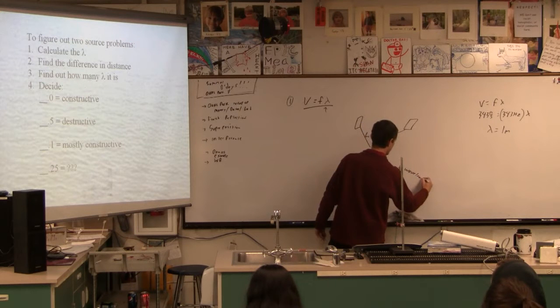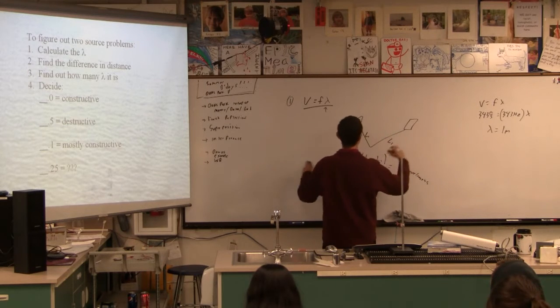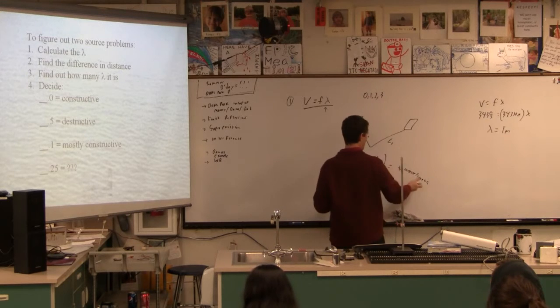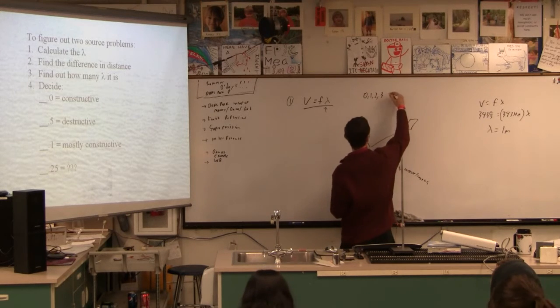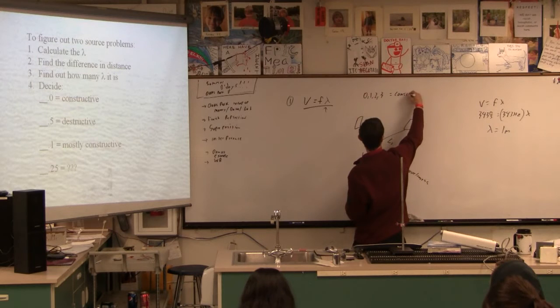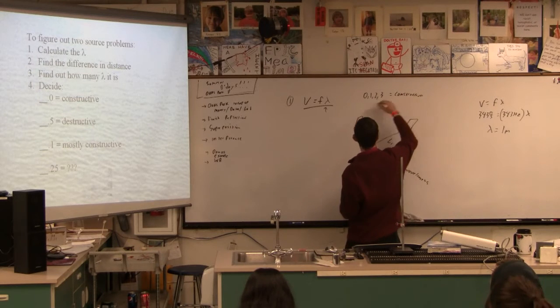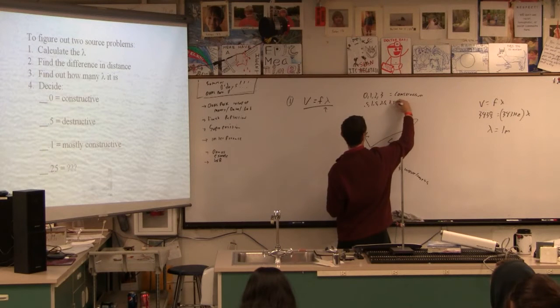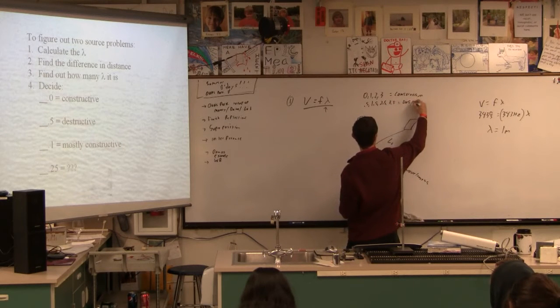And then, what you want to do is figure out how many wavelengths that is. So you're going to divide this by the wavelength, and that's going to give you the number of wavelengths. And then look at it. If it's 0, 1, 2, 3, that gives you n. So if it's 0, 1, 2, 3, then that's constructive. If it's 0.5, 1.5, 2.5, 3.5, then that's destructive.